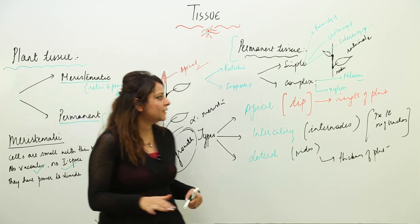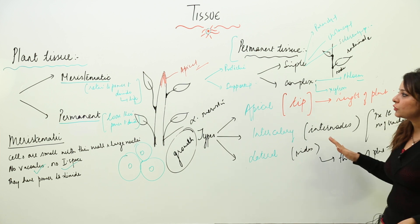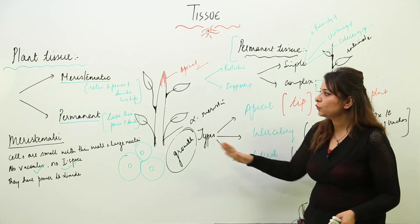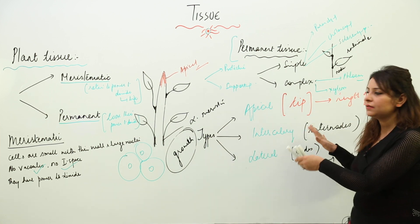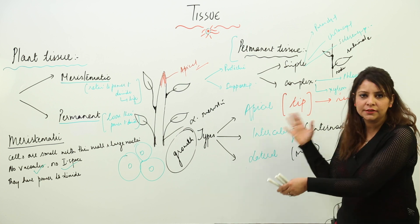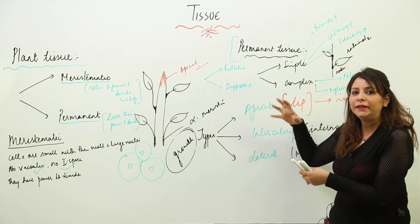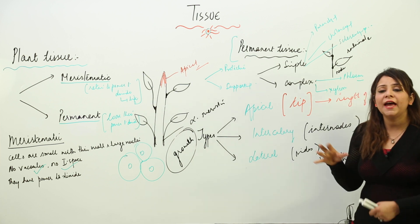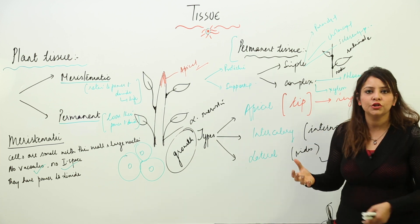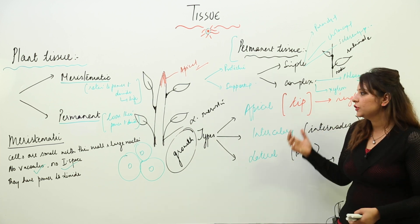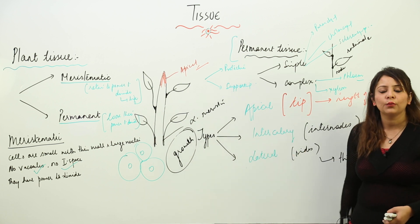For now, let's leave the permanent tissue for a moment and finish the meristematic one first, since the space is short. I'll erase the board and we'll start with the permanent tissue, as we need to draw a lot of divisions for it.